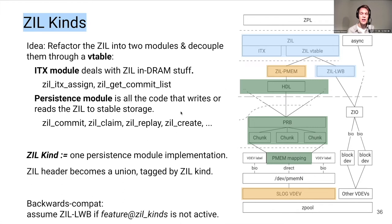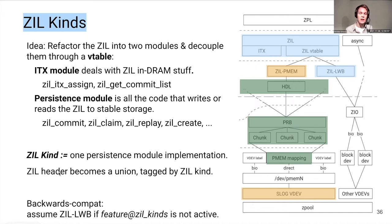Any ZIL kind needs a place to store per-dataset information, like the LWB list head for the ZIL-LWB kind. With ZIL kinds, the ZIL header becomes a tagged union, where the union tag is the enum value representing the ZIL kind. This design is also backwards compatible: if the ZPool feature for ZIL kinds is not yet active, we can assume the dataset uses the old LWB-based ZIL kind and the old ZIL header layout.